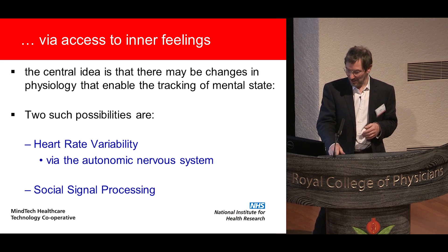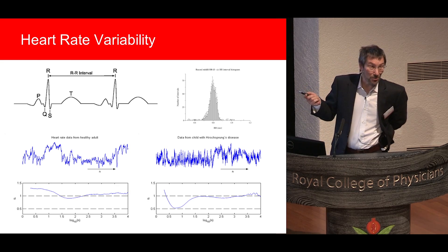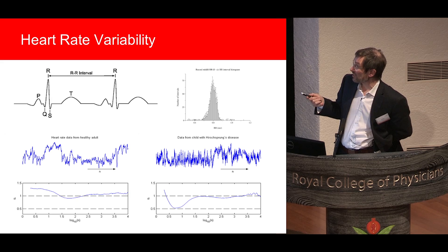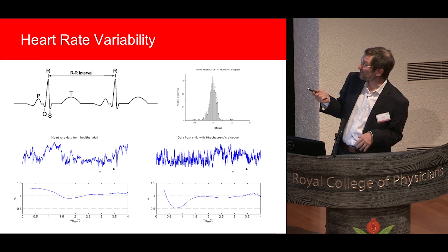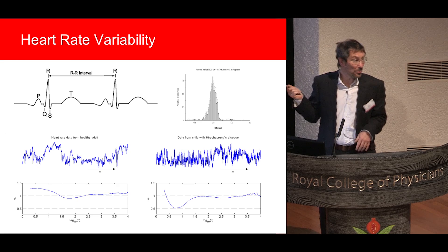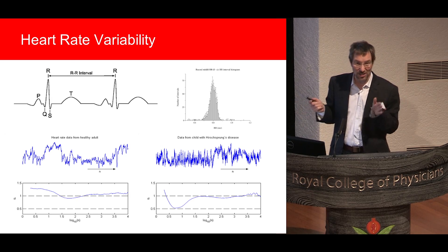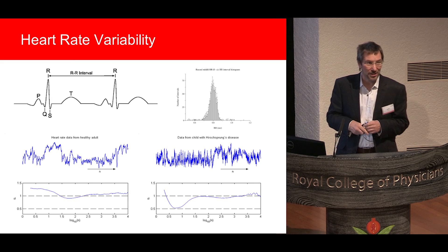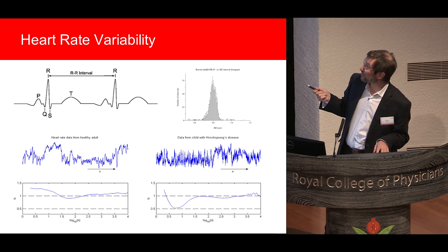Starting with heart rate variability: the time interval between heartbeats is never exactly the same — if you measure many of them and plot a histogram you get a distribution with an average of about 0.8 seconds, giving roughly 70 beats per minute. This variability is largely due to the autonomic nervous system's control systems, which continually change the heart rate.